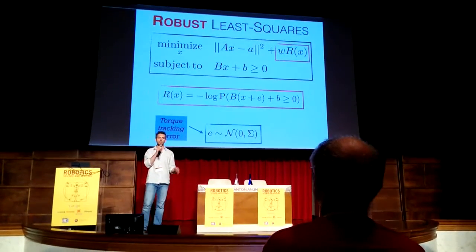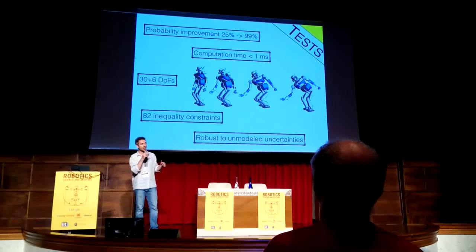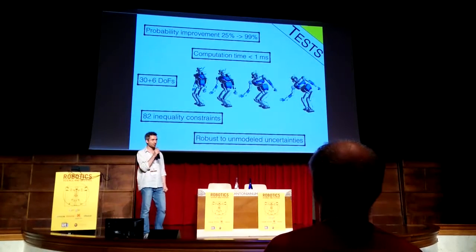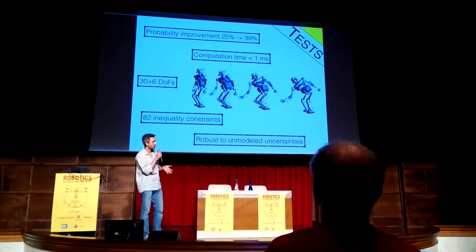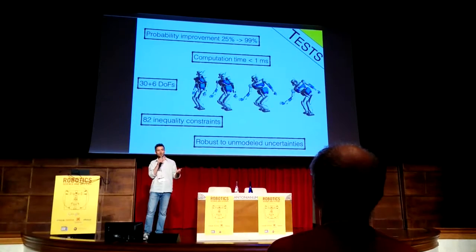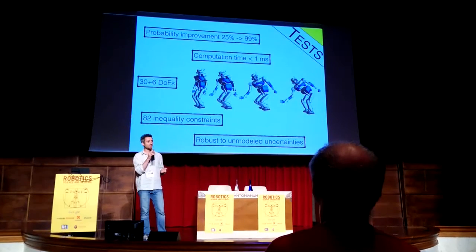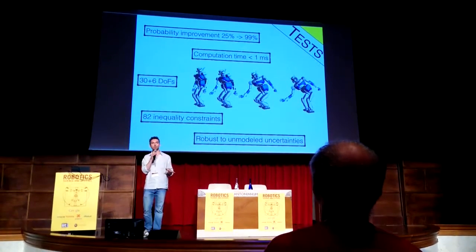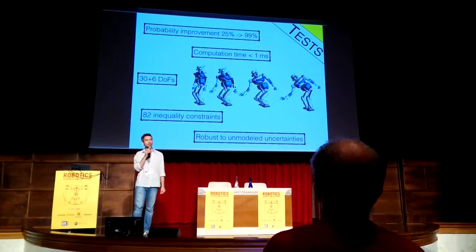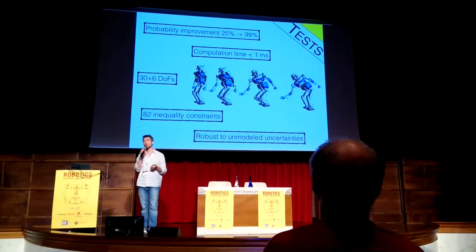We tested the resulting formulations in simulation, comparing them against each other and also against the classic non-robust formulation. We measured a large improvement in robustness — that is, in the probability of satisfying all the inequality constraints. And despite the large number of degrees of freedom of the system, 36, and the large number of inequality constraints, 82, we managed to keep the computation time below one millisecond, meaning you can apply this in real time on a real robot. We also empirically showed improved robustness to unmodeled uncertainties, such as errors in the inertial parameters of the system.